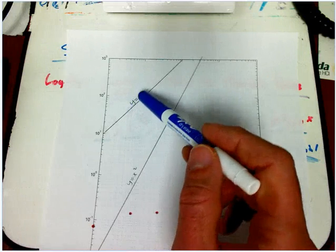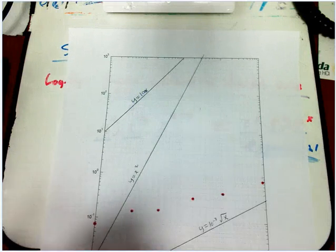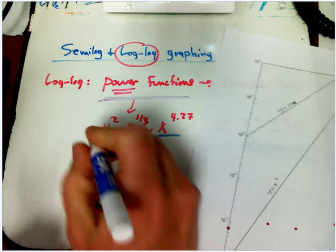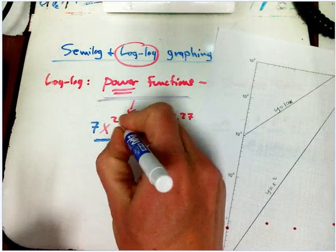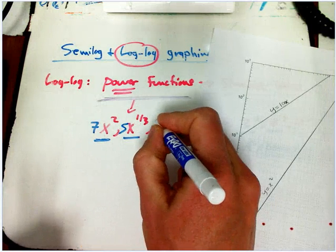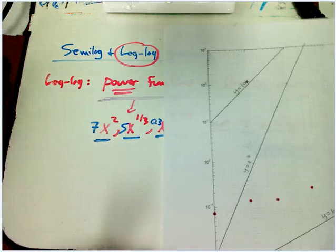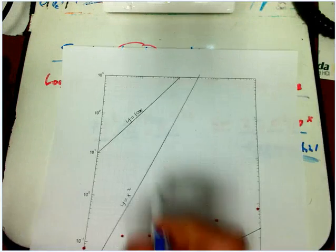Even if it's got a multiplier, it's still going to work. So it's really going to be power functions like 7x squared or 5x to the one-third or 0.3x to the 4.27.